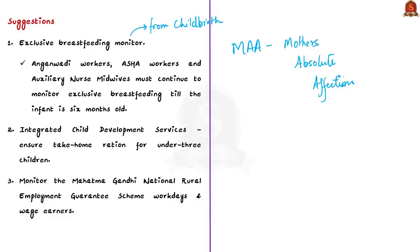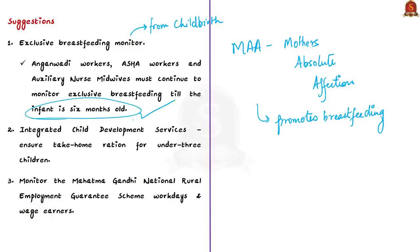The author suggests initiating an exclusive breastfeeding monitor — monitoring breastfeeding activity until the baby is six months old. This includes monitoring after successful initiation of breastfeeding in hospital and continuing until the infant is six months old, monitored by Anganwadi workers, ASHA workers, and Auxiliary Nurse Midwives. Along with ensuring exclusive breastfeeding, they should also record the timely initiation of complementary feeding, which can be done with soft gruel — food like fruit puree, cereals, and cereal puree.